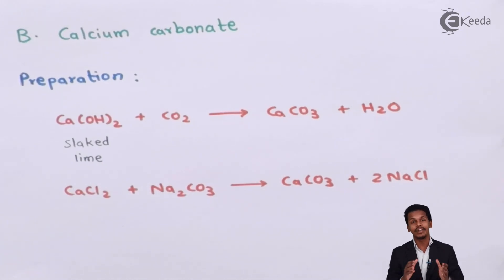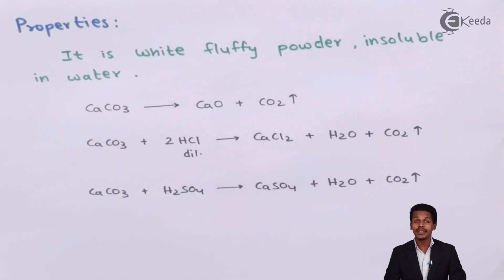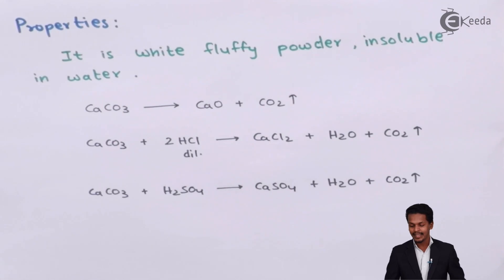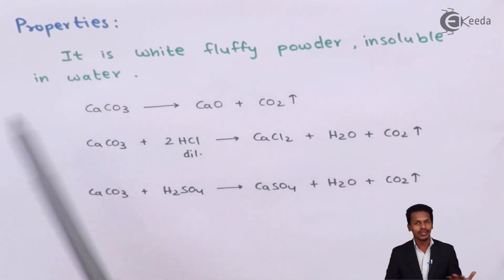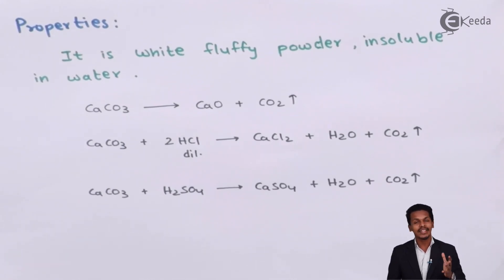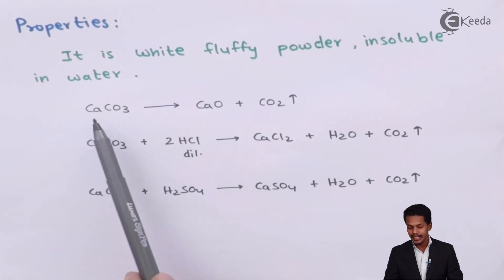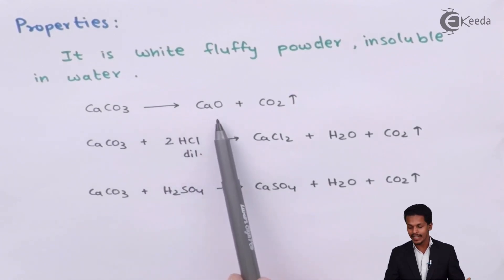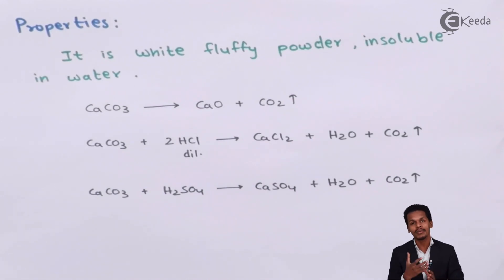Now let us discuss the properties of calcium carbonate. For physical properties: it is a white fluffy powder which is insoluble in water. It is easy to obtain since it is present in chalk and also in marbles used as tiles in our homes. For chemical properties: on decomposition, calcium carbonate gives calcium oxide and carbon dioxide — this is also how we prepare calcium oxide from calcium carbonate.